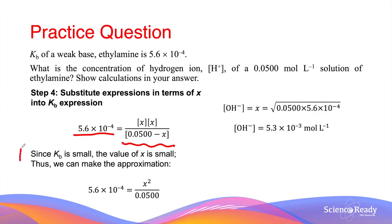Before continuing, let's make a simple assumption so we can simplify our equation. Since Kb is a small number, the value of x, that is the change in concentration of the base, is small.